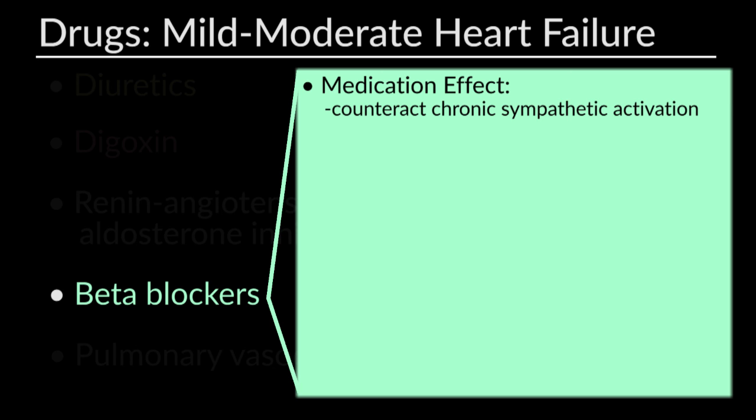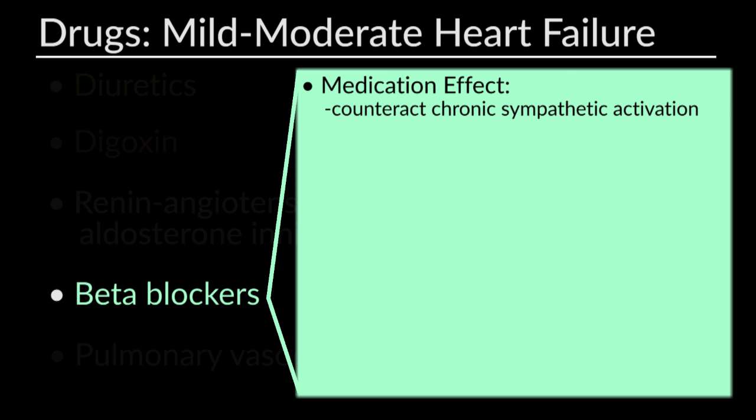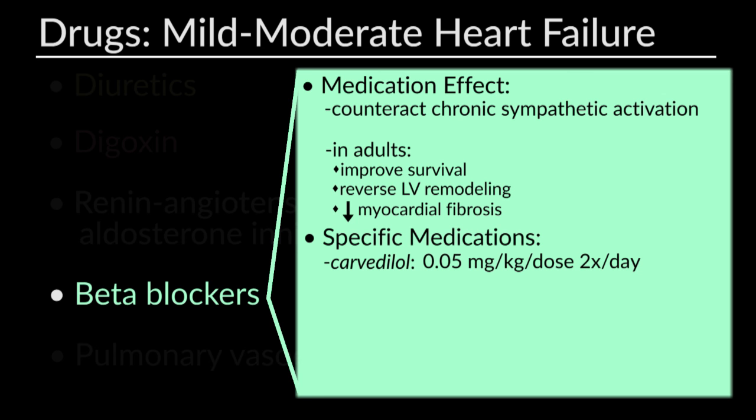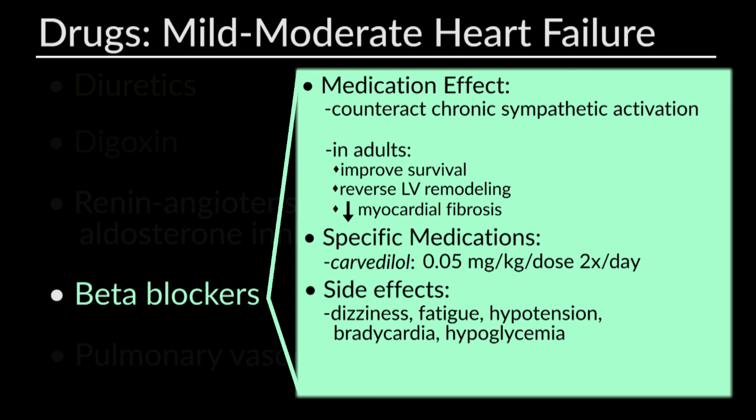Beta blockers counteract the maladaptive effects of chronic sympathetic activation. In adults, they improve survival, reverse LV remodeling, and decrease myocardial fibrosis. They should only be added once stable on other heart failure medications including ACE inhibitors and diuretics. Carvedilol is generally the recommended beta blocker for LV dysfunction in children. Dosing starts very low at 0.05 milligrams per kilo per dose twice daily and is increased cautiously every two weeks. Side effects include dizziness, fatigue, hypotension, bradycardia, and hypoglycemia.